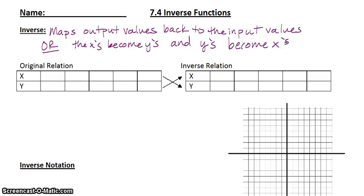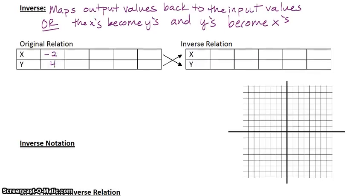Let's suppose that I had a relation. A relation is just a term to mean any set of ordered pairs. Here's my relation, and while I give you these pairs, we're going to go ahead and graph it. The first ordered pair is negative 2, 4 — there it is. Next, negative 1, 2.